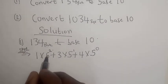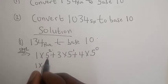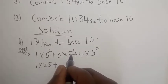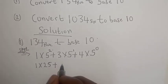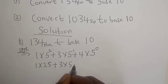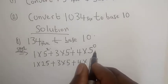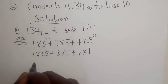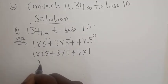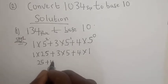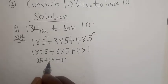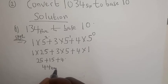This is equal to: 1 times 5 squared — 5 squared is 25 — plus 3 times 5 raised to power 1, which is the same as 5, so 3 times 5 is 15, plus 4 times 5 raised to power 0, which is 1. So we have 1 times 25 is 25, plus 3 times 5 is 15, plus 4 times 1 is 4. The final answer is 25 plus 15 is 40, plus 4, that is 44 base 10.